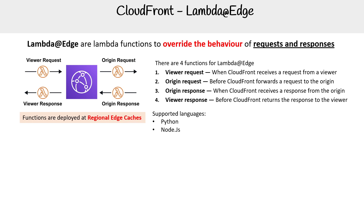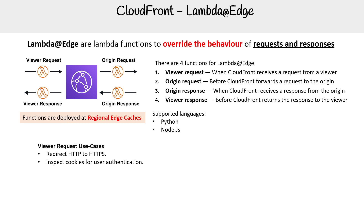This matters because it affects latency for these functions. For viewer request use cases, we could redirect HTTP to HTTPS, inspect cookies for user authentication, and modify headers for A/B testing.